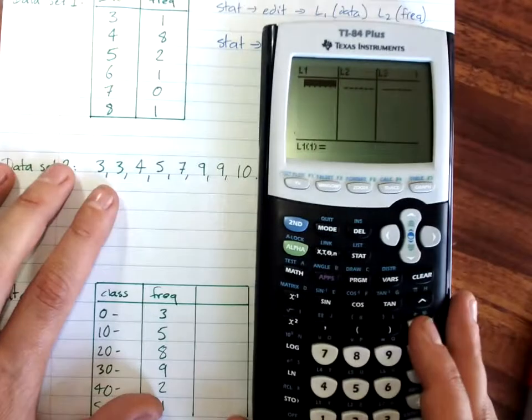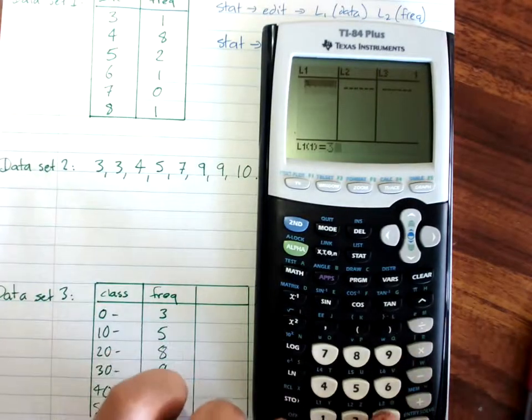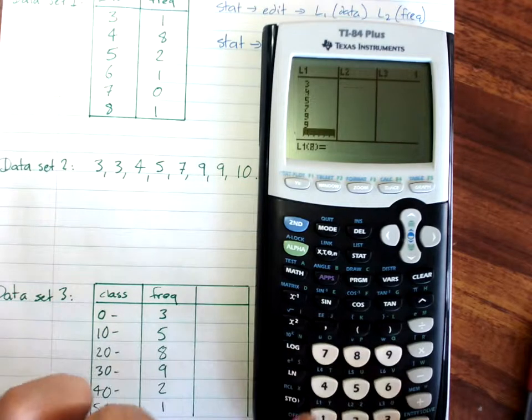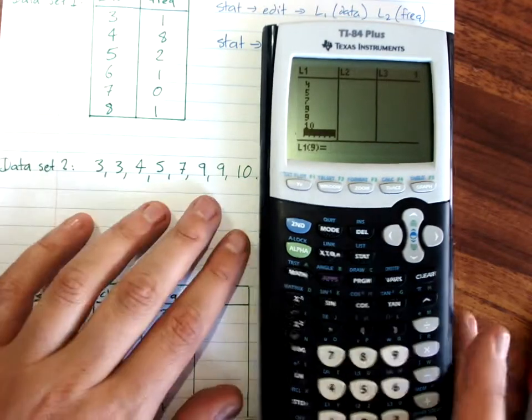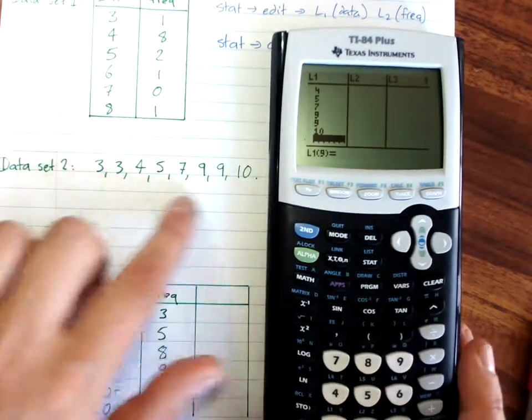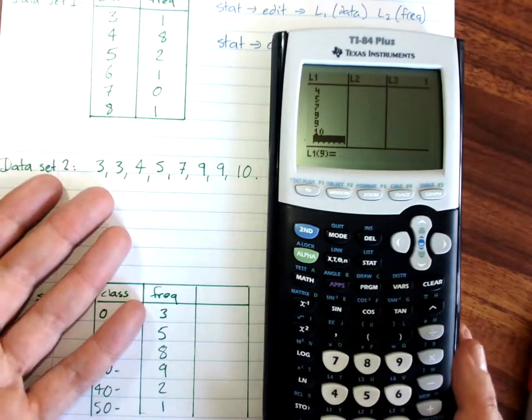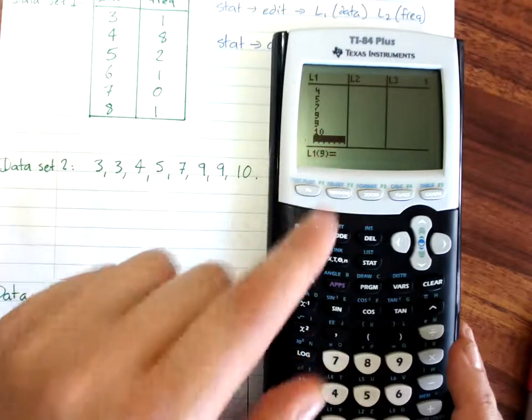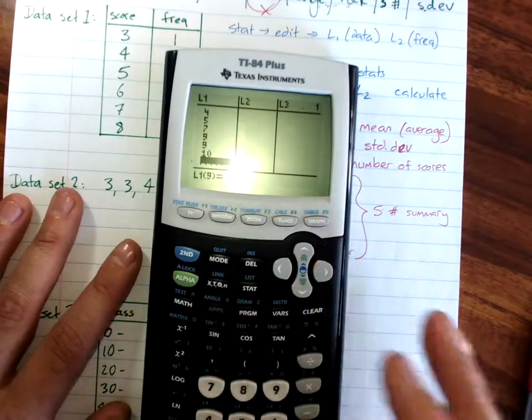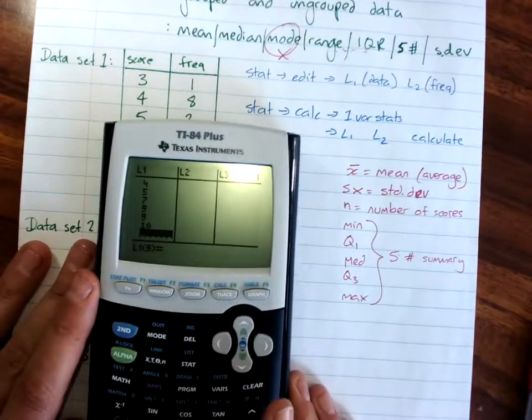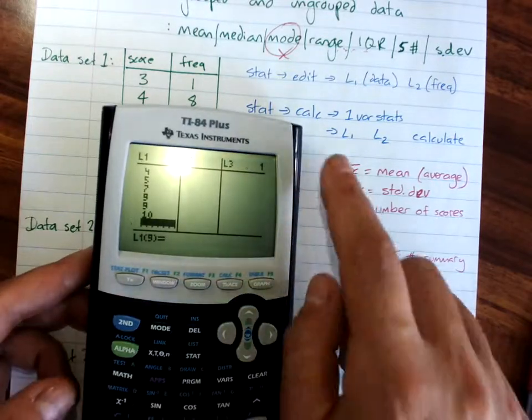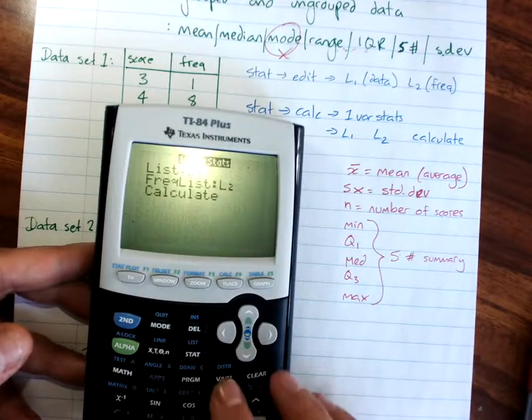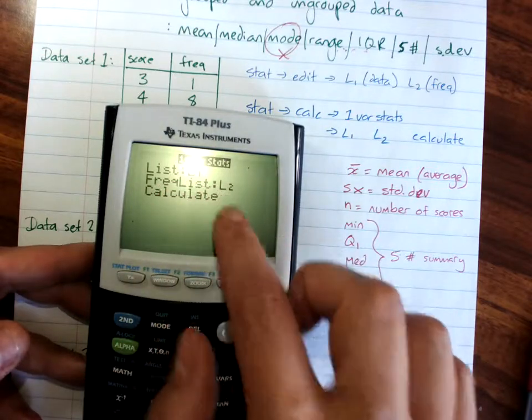This is just one list of data, so we just enter it down the page like so. And you could get that easily from a stem and leaf plot. If you had to calculate the average and you had a stem and leaf plot, you can just read off the data and put it in. The same steps again, stat, calc, one variable stats, but we don't have a frequency list.